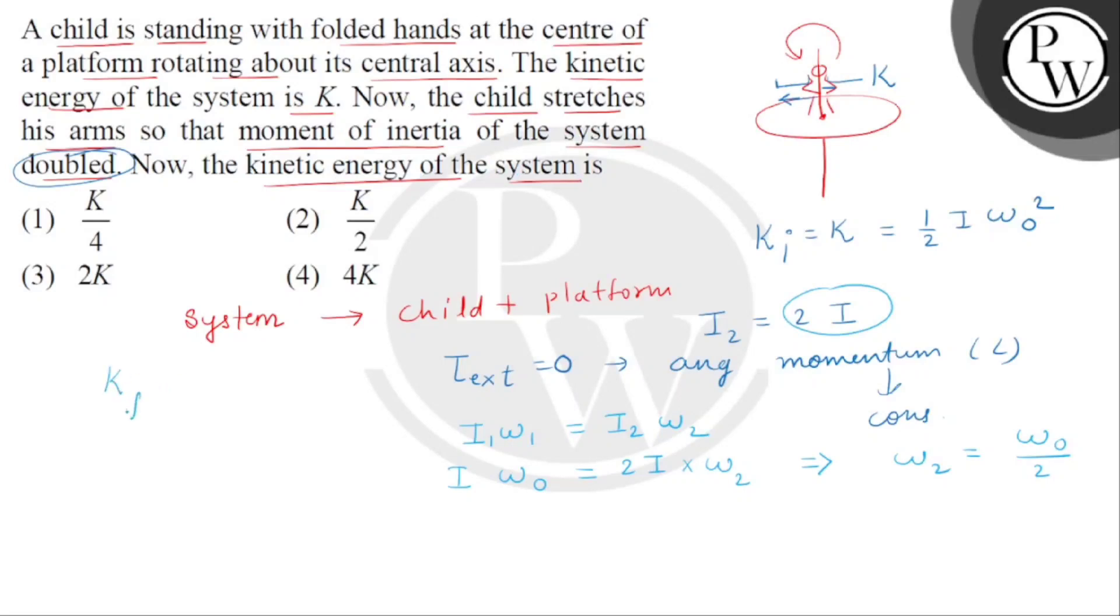So we can write final kinetic energy which is equal to half I2 omega 2 square. Now we can write half I2 is twice of I and omega 2 is omega naught divided by 2 bracket square. So this was the initial kinetic energy that is K. So the answer is K by 2.